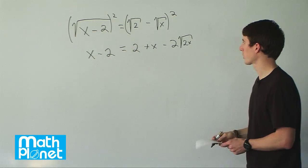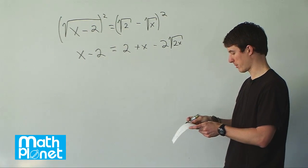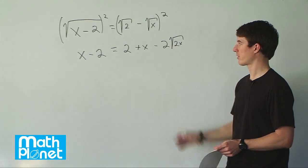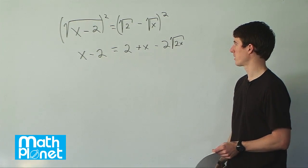So we're getting close. We still have a root x, which is a bit of a problem, but we can start to simplify and see what we can do with this root x. Let's simplify both sides a little and see what we have.